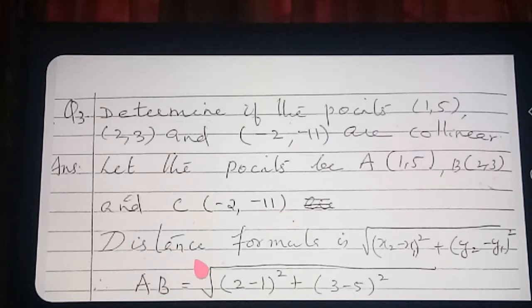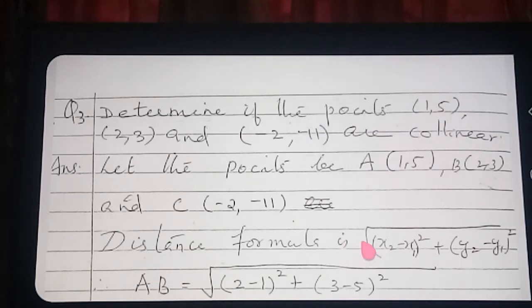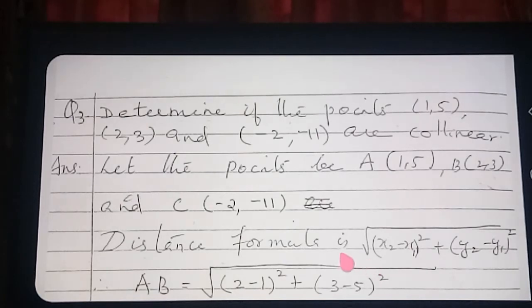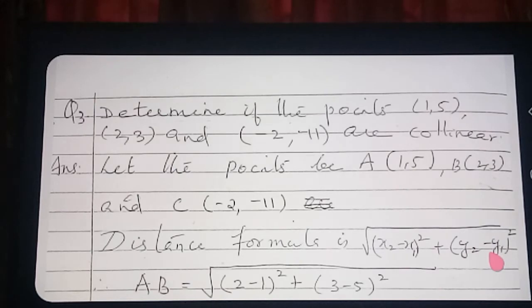So first of all we will write the distance formula. If you don't write the corresponding formula, half a mark will be deducted. Therefore the distance formula is: root of (X2 minus X1) whole square plus (Y2 minus Y1) whole square.